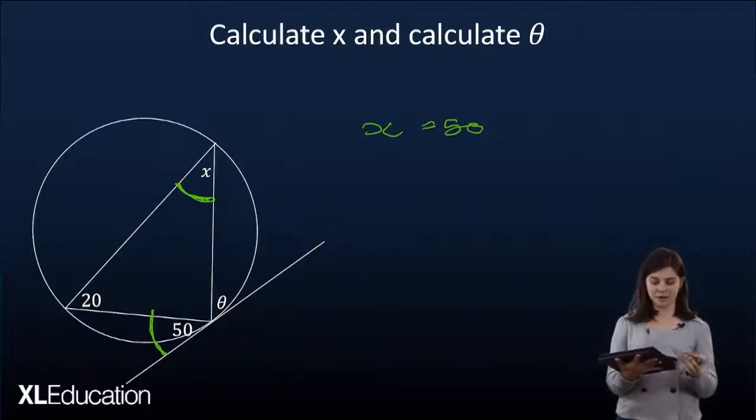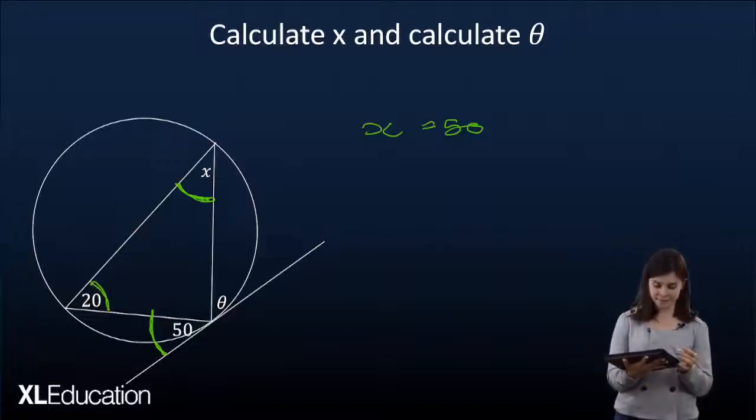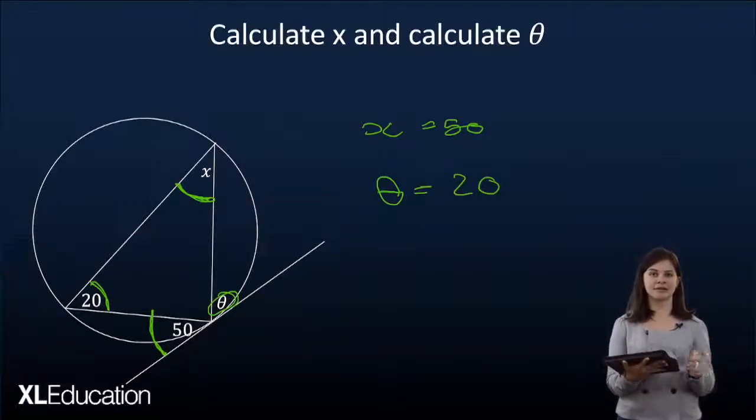Now the same will apply in reverse. We've got 20 degrees in the alternate angle. So we can see then that given theta over here, theta is going to equal 20 degrees since it's the opposite angle at the tangent.